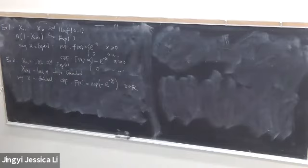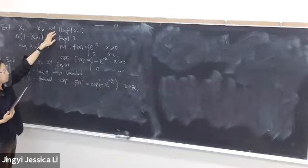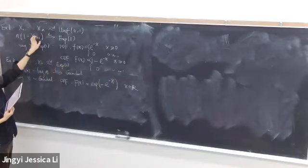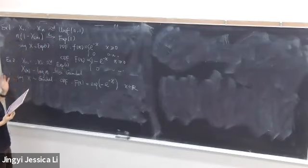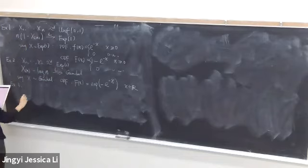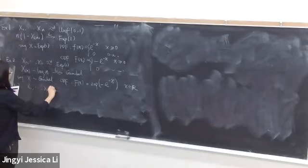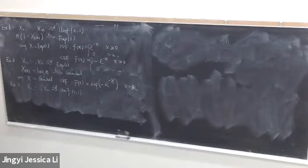These two results — for uniform(0,1) and exponential(1) — are extreme order statistics results about the maximum. We derived them last Monday. Now let's do another example. Same setting as example one: X_1 through X_n are iid uniform(0,1). The question is: what is the asymptotic distribution of the range R_n, defined as the maximum minus the minimum of the sample?